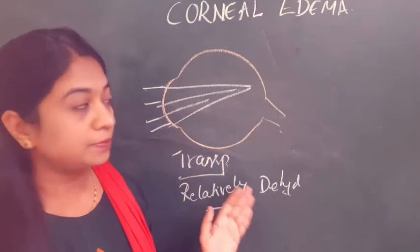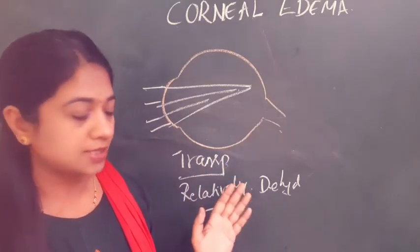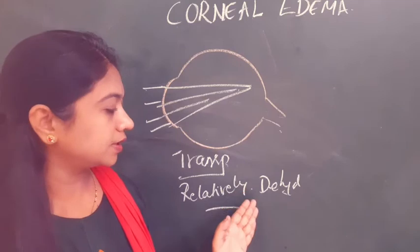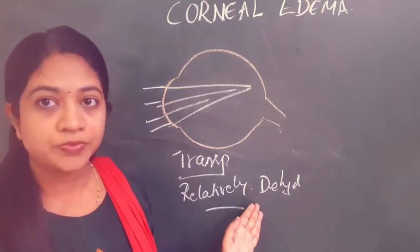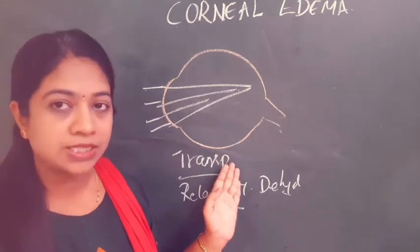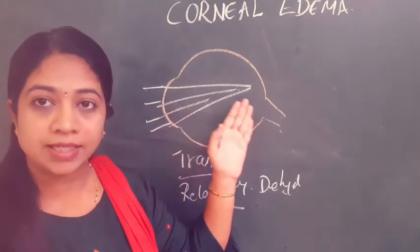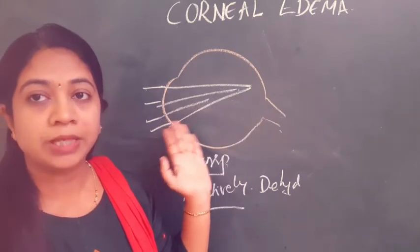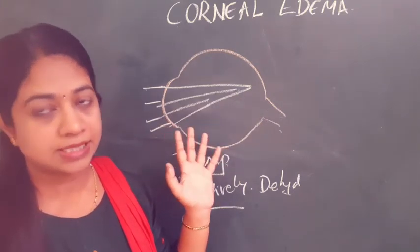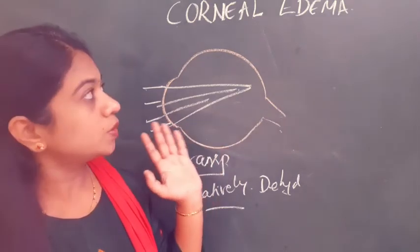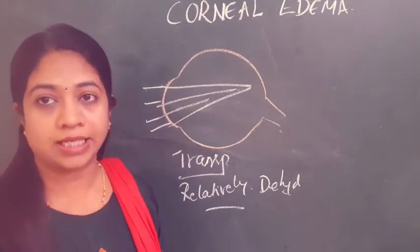If there is any imbibition of fluid in the cornea — that is, corneal edema occurs — then the relative state of dehydration is hampered, thereby the transparency is hampered, and the rays of light are not focused onto the retina. So the main purpose of the eye, that is vision, is hampered. It is therefore very important to know about corneal edema.